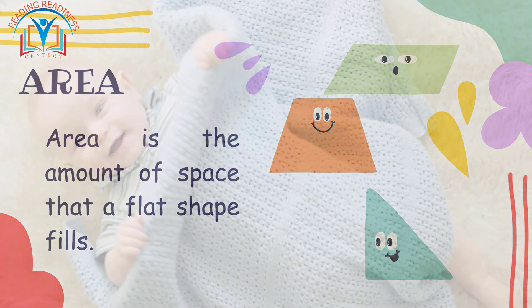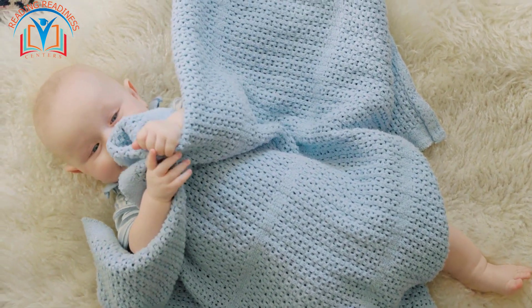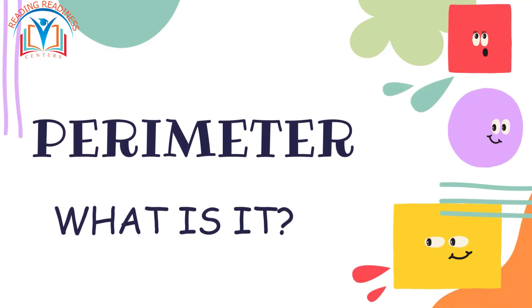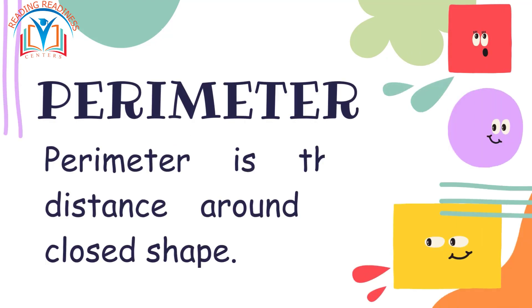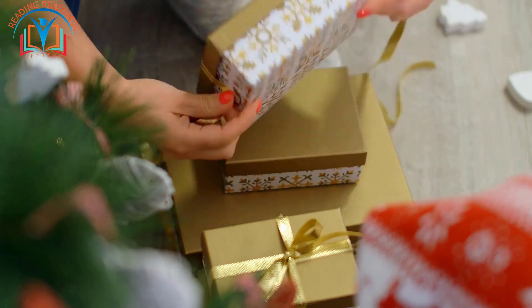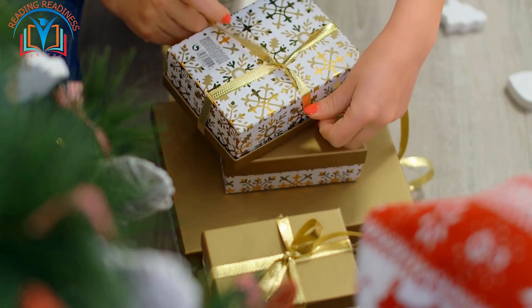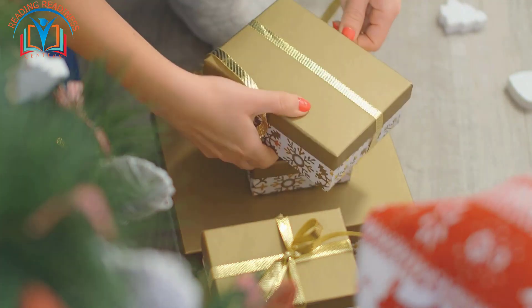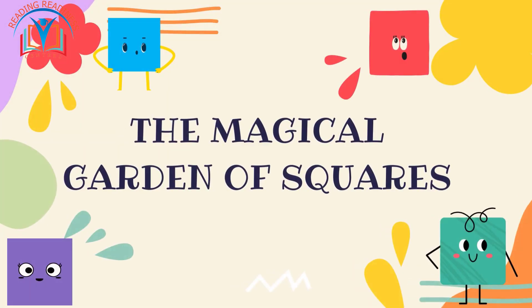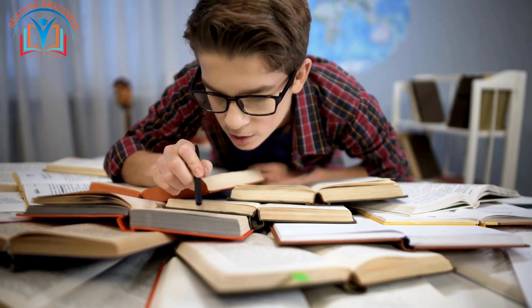It's like measuring the size of a blanket that could cover your entire room. What is perimeter? Perimeter is the distance around a closed shape. It's like measuring the length of a ribbon that could perfectly go around your presents, touching every point along the way.